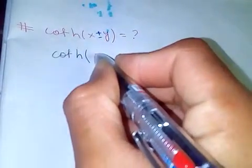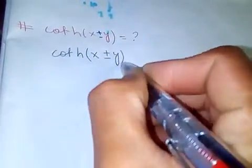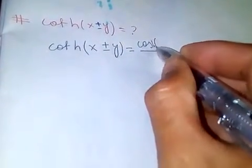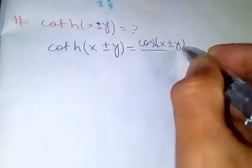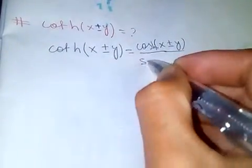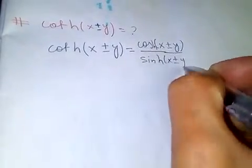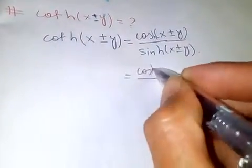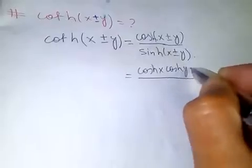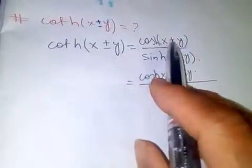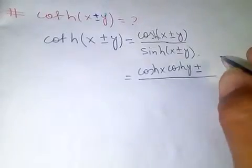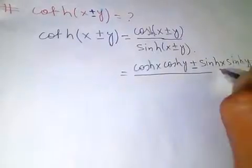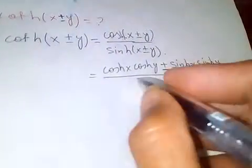We know coth(x ± y) is equal to cosh(x ± y) divided by sinh(x ± y). Expanding the numerator: cosh(x)cosh(y), with plus when using plus and minus when using minus, plus sinh(x)sinh(y).